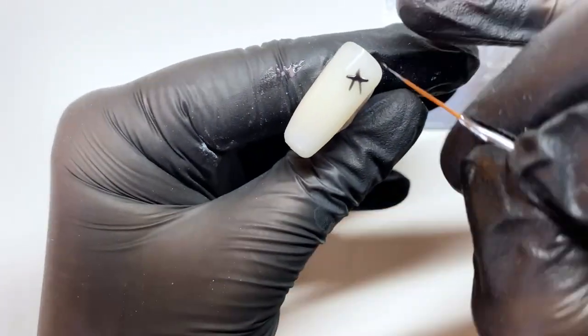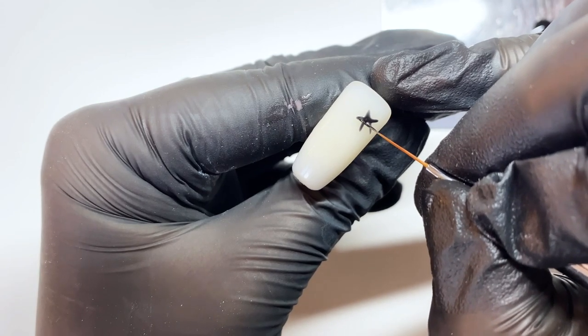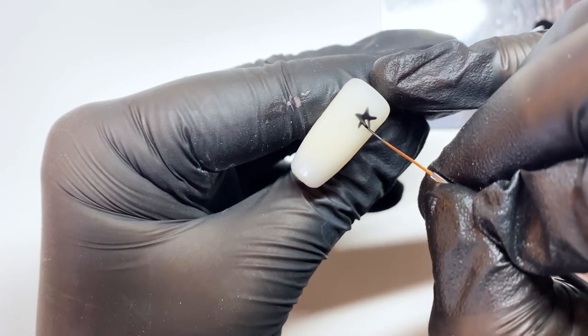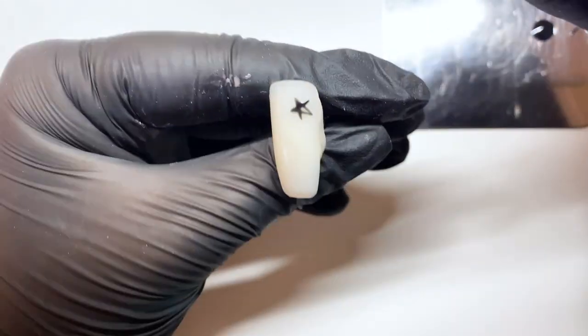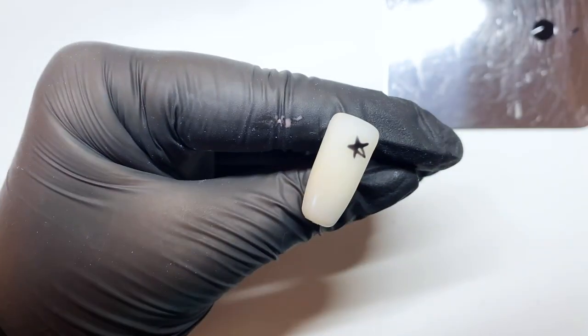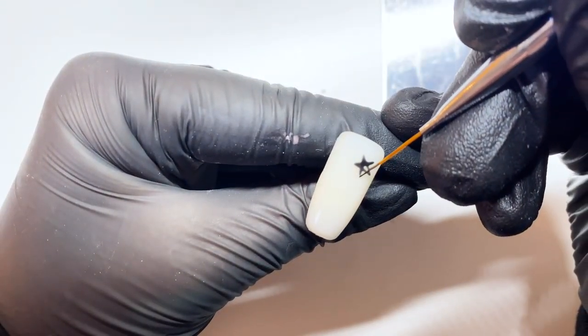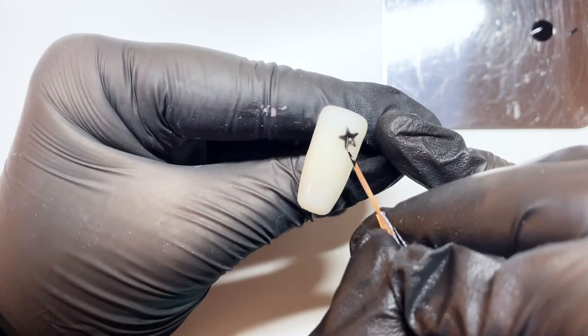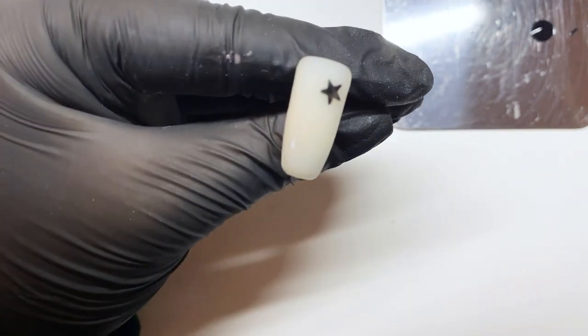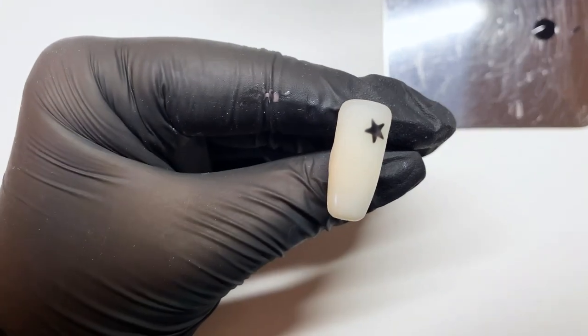Normal gel polish has a thinner consistency compared to high pigment gel. This can make the color payoff slightly weaker, and for colors such as black the finish may look gray unless you do two coats. I also find it harder to get those really clean sharp lines using normal gel, therefore when it comes to any small intricate design I always opt for high pigment gel.